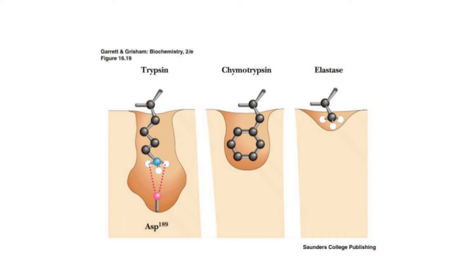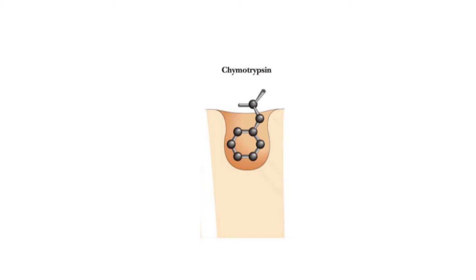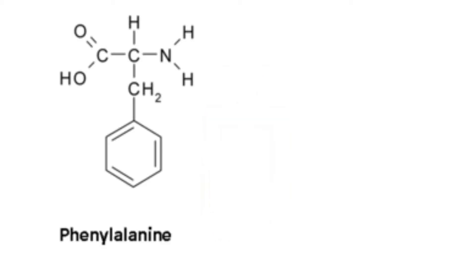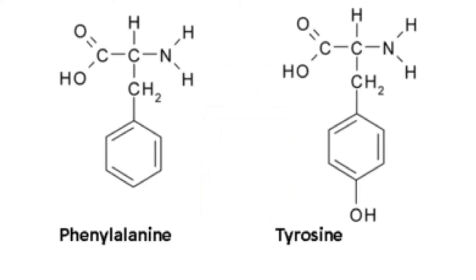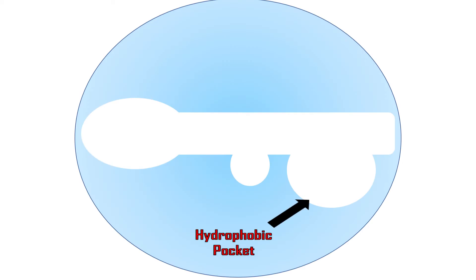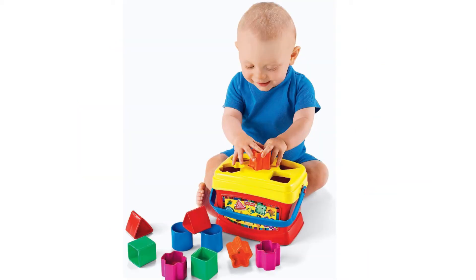Each of these are responsible for cleaving certain amino acids. Today we're going to focus on chymotrypsin, which is involved in cleaving phenylalanine and tyrosine. What you'll notice about both of these amino acids is that their shape is incredibly similar. Likewise, the hydrophobic pocket where the reaction takes place only fits the shape of those two amino acids. It's kind of like one of those child games where the square shape only goes in the square area — you can't put the circle or the triangle in the square.